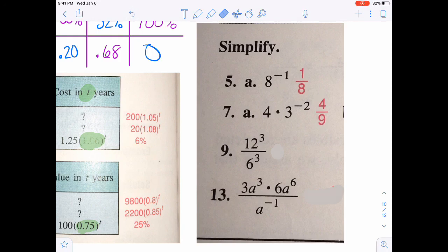Number 9, you could work that out as far as the 12 to the third and the 6 to the third, or you could rewrite it, at least mentally, as 12 over 6 to the third, and then do the 12 over 6, which is 2, and 2 to the third is 8.